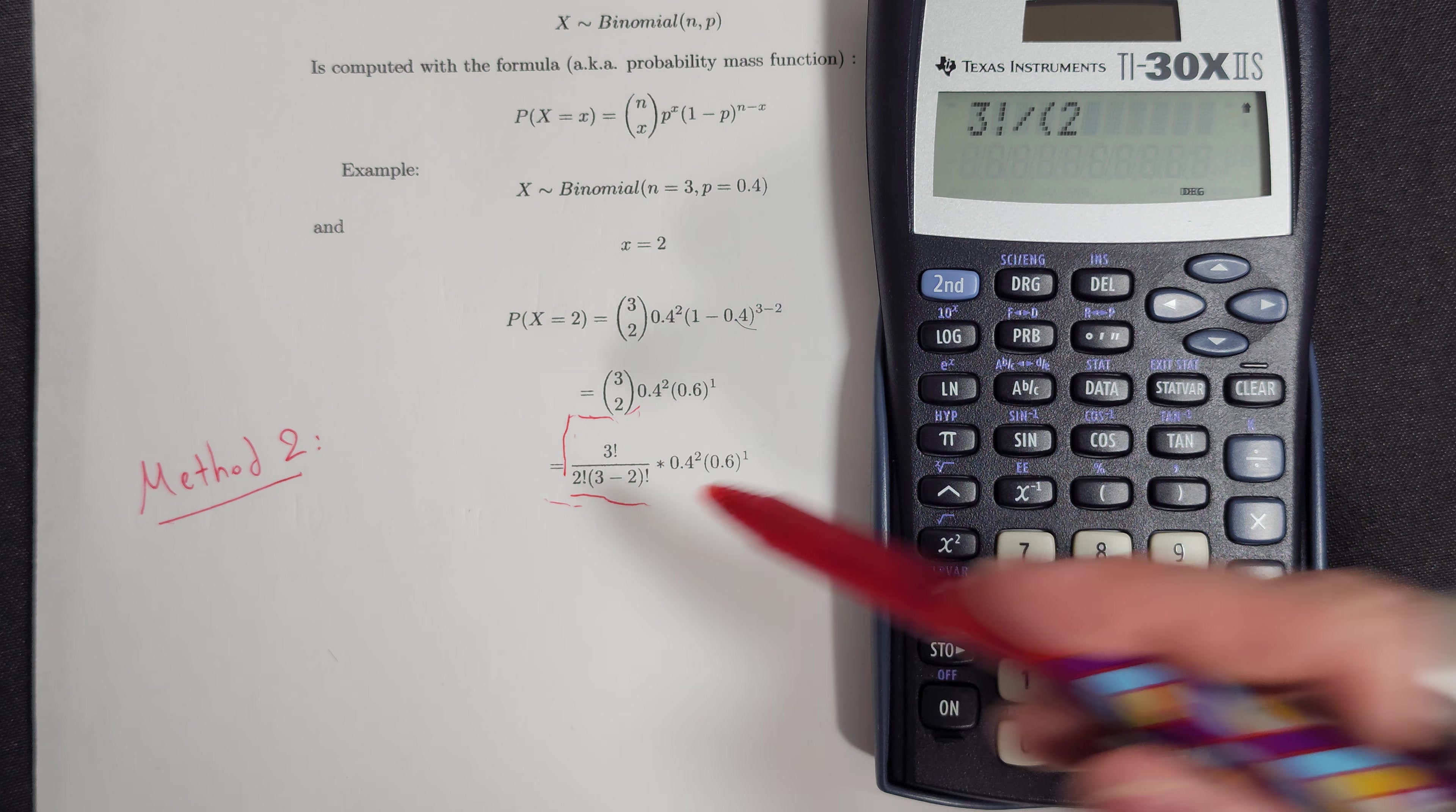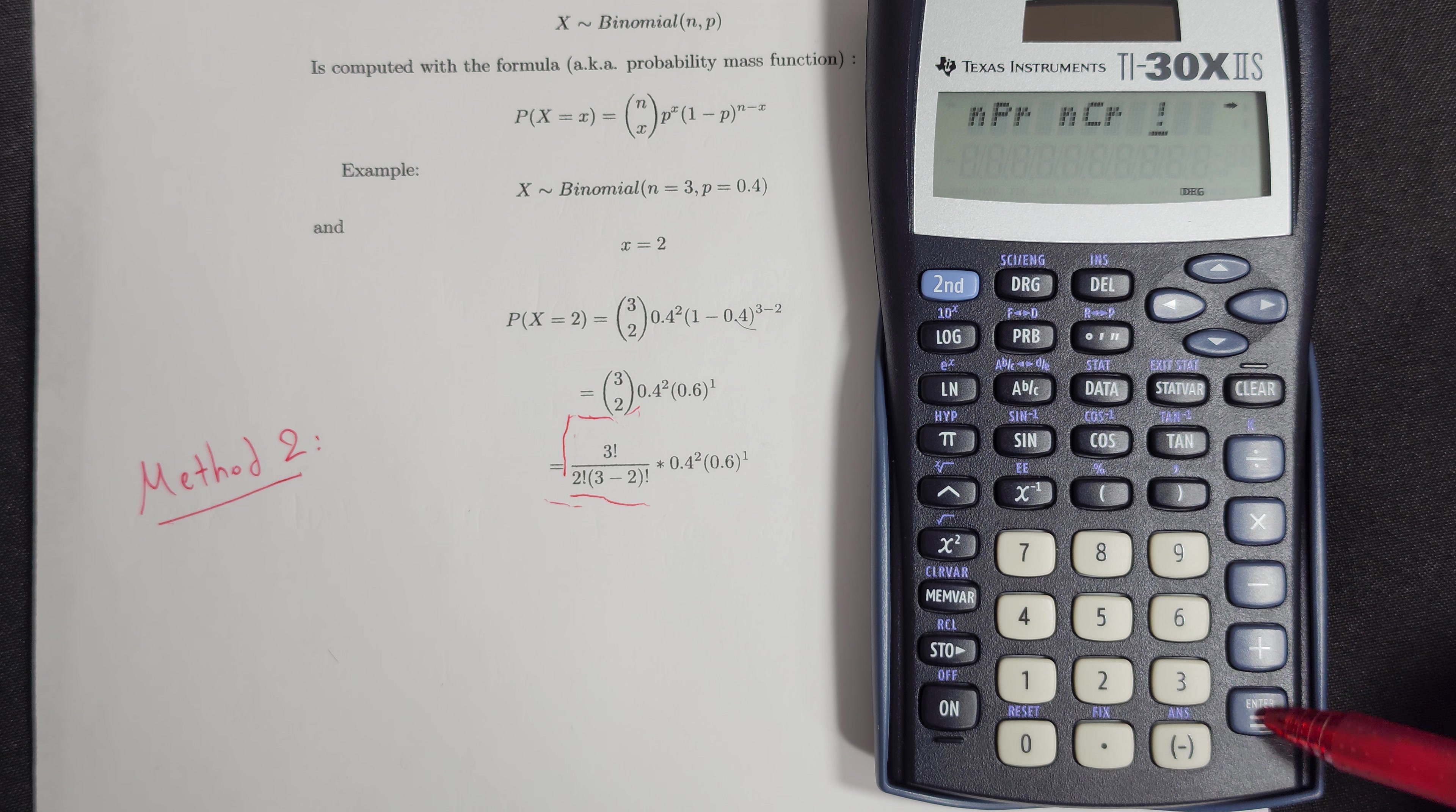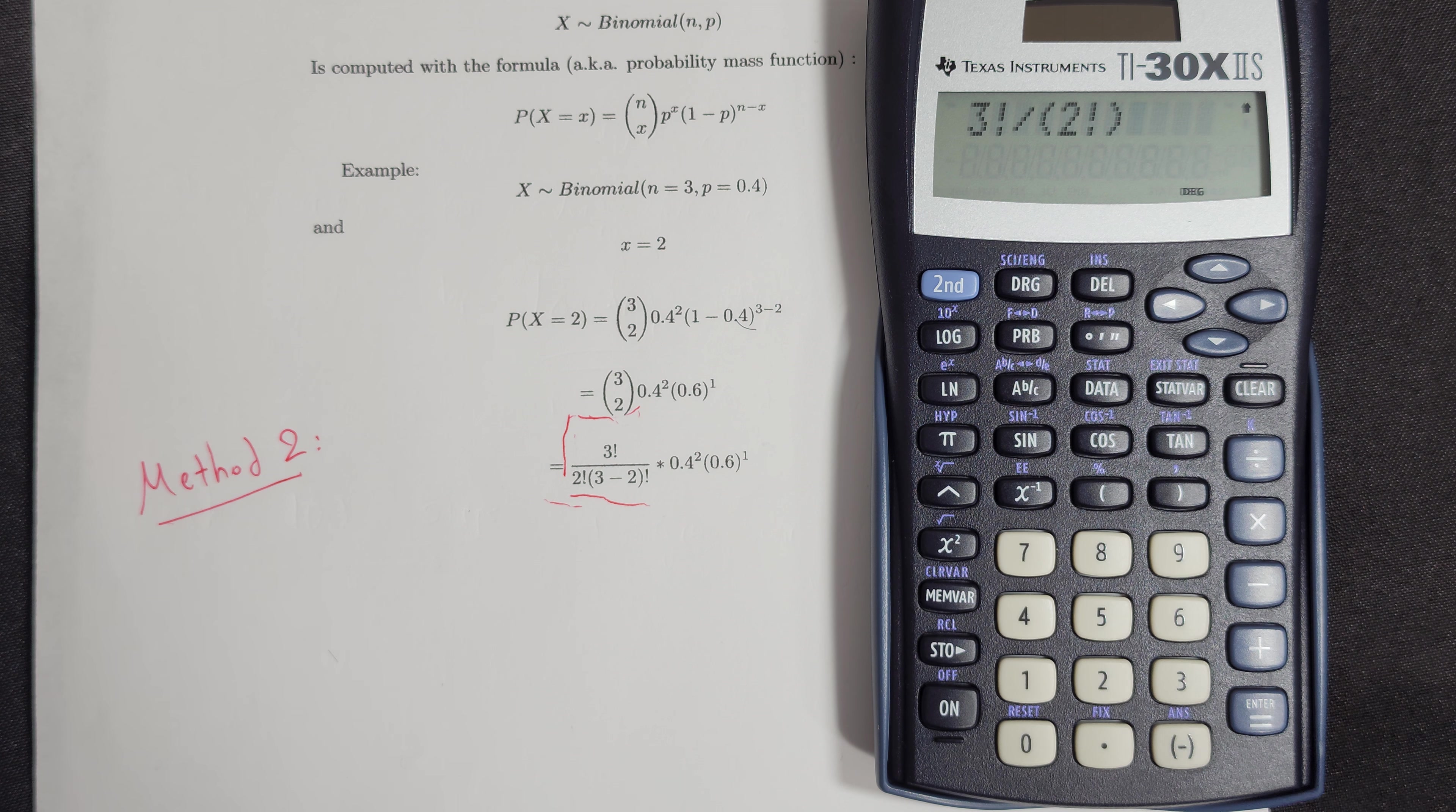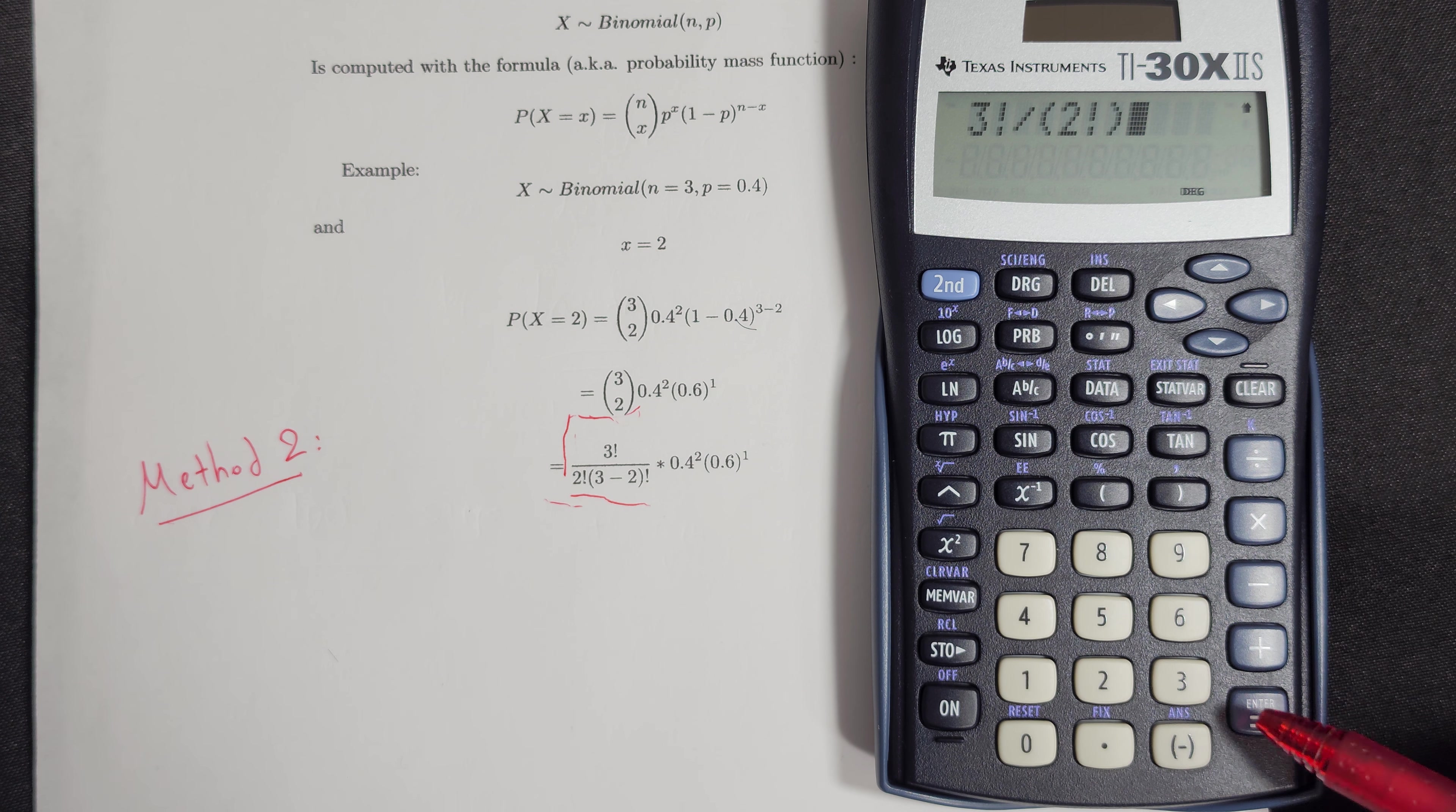2, and we want the factorial sign. So we press the PRB, go right, press the factorial, and then the last part is equal to 1 factorial, which is 1. So we don't have to calculate this. So we press enter.